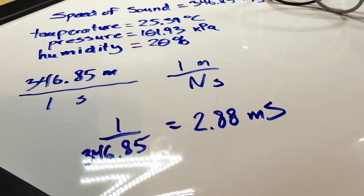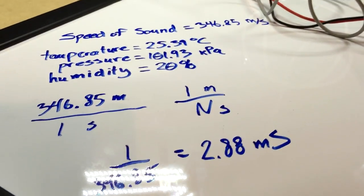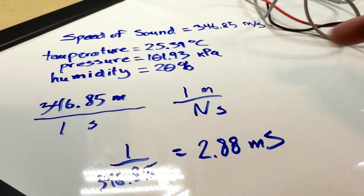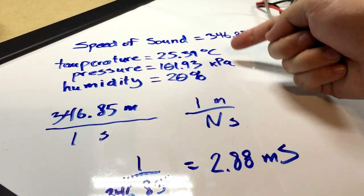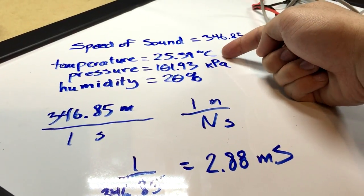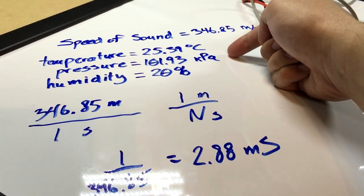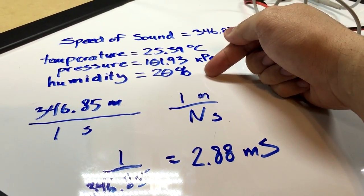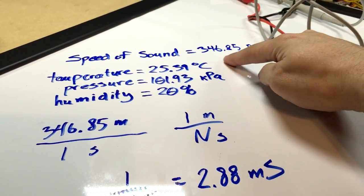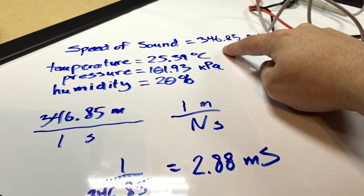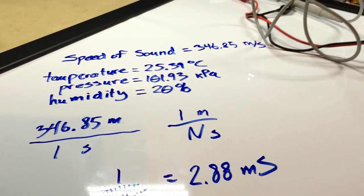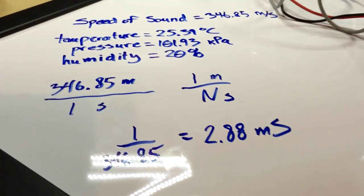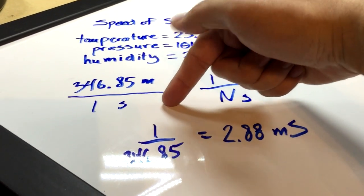The speed of sound varies depending on temperature, pressure, and humidity, so I wanted to do the math to get the exact speed of sound for my lab. The temperature in here is 25.39 Centigrade, pressure is 101.93 kPa, and humidity is 20%.